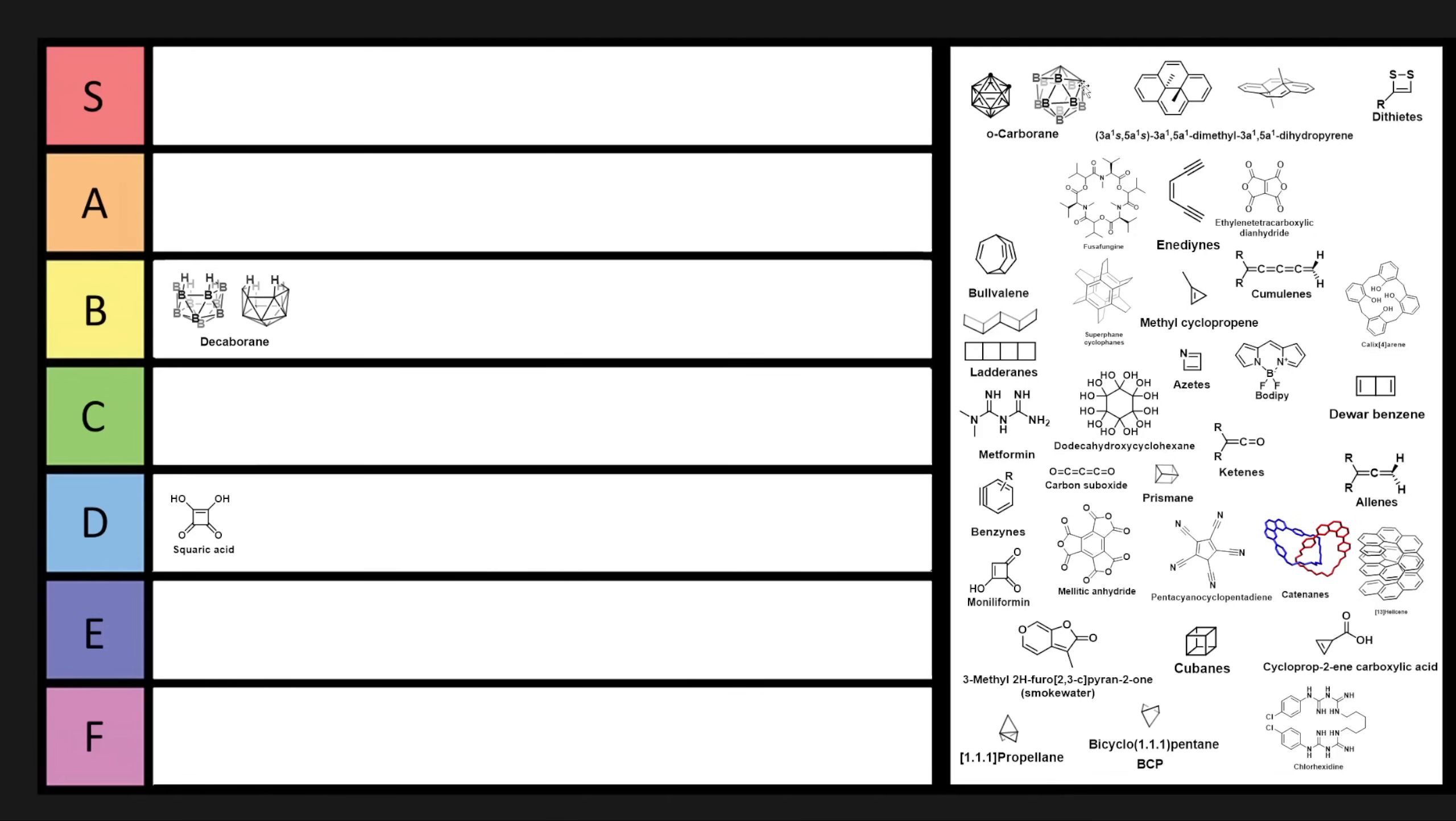And once you start adding substituents, it gets even worse. So carboranes are a little bit more cursed than decaborane in my opinion because they also start violating carbon to an extent. So I think we're going to have to put carboranes in S tier.